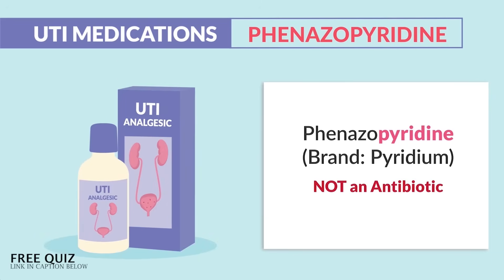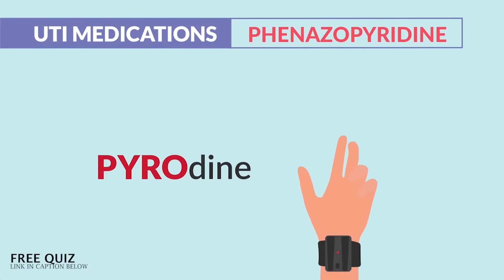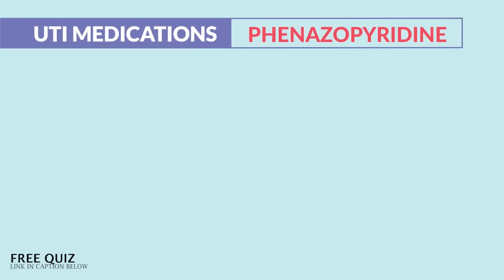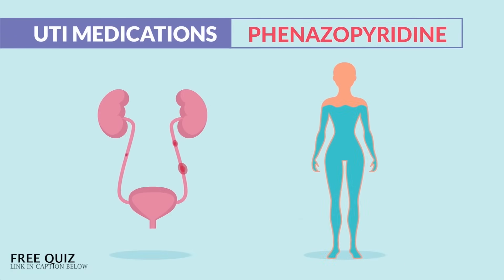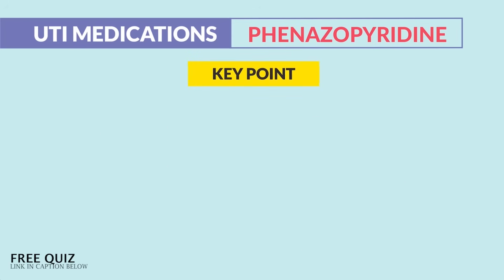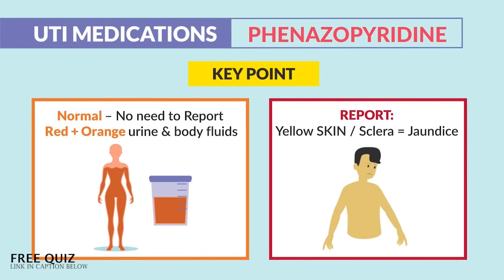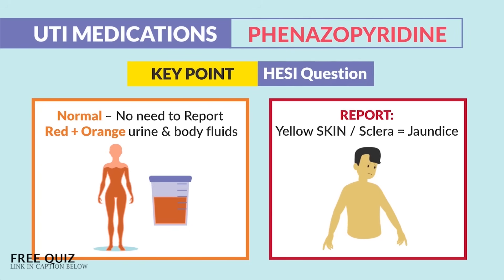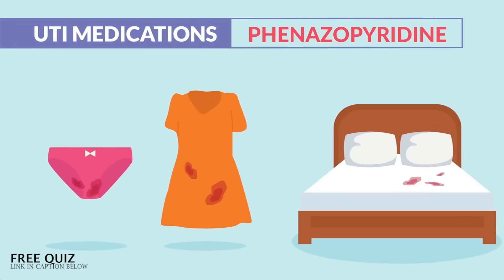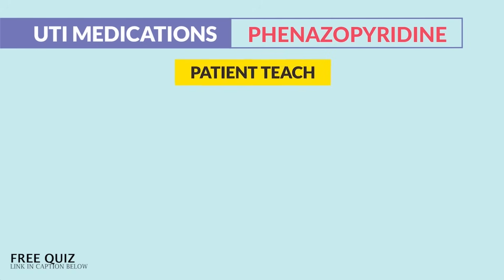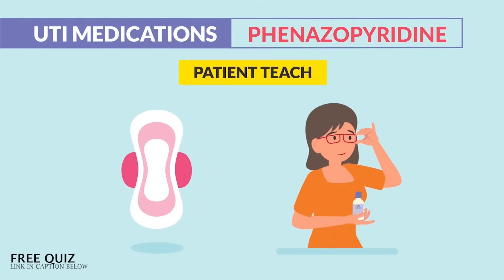The last drug is not an antibiotic — phenazopyridine, brand name Pyridium. It's a UTI analgesic given for pain relief during the burning and irritation of UTIs. Some instructors stress the 'pyro' in pyridine — like a fire — since it eases the fiery burning and turns body fluids red and orange. Key points: red and orange urine is normal and does not need to be reported, but do report liver toxicity symptoms like yellow skin and sclera — jaundice. Teach patients to wear sanitary pads as it stains clothing, and wear glasses instead of contacts.